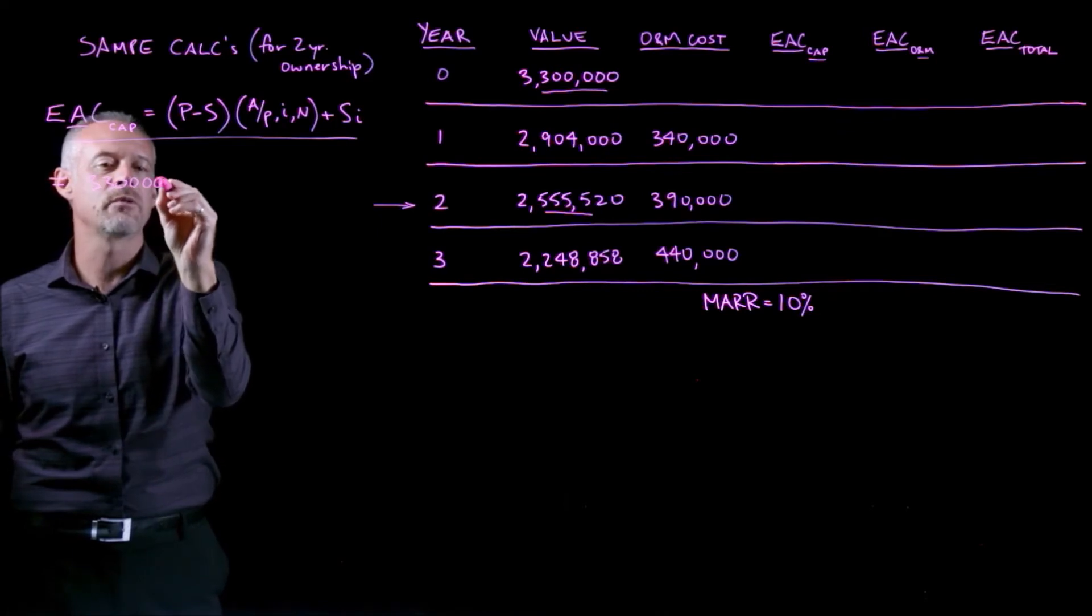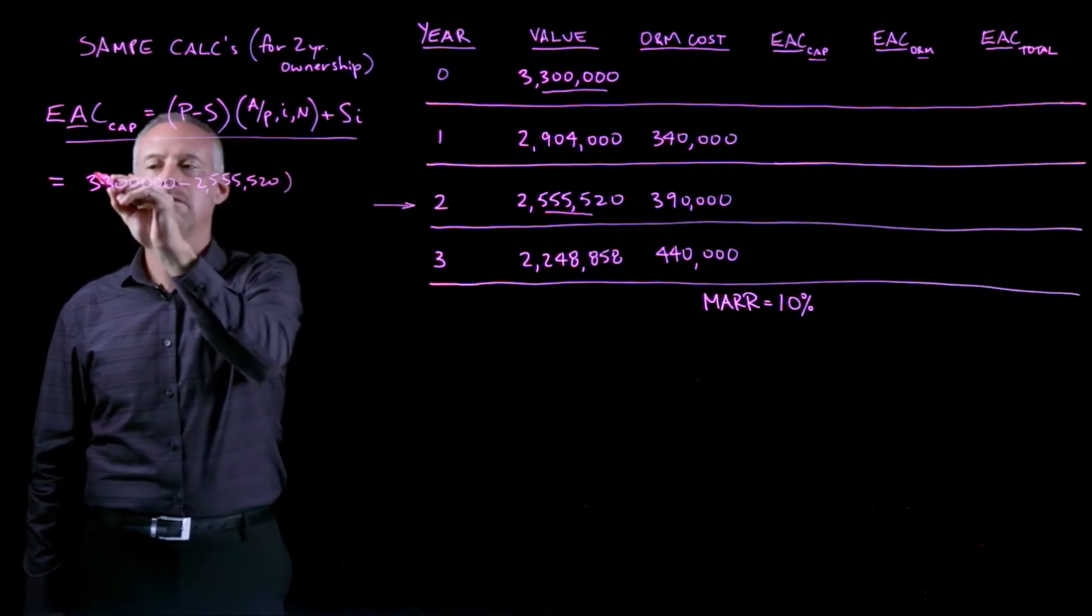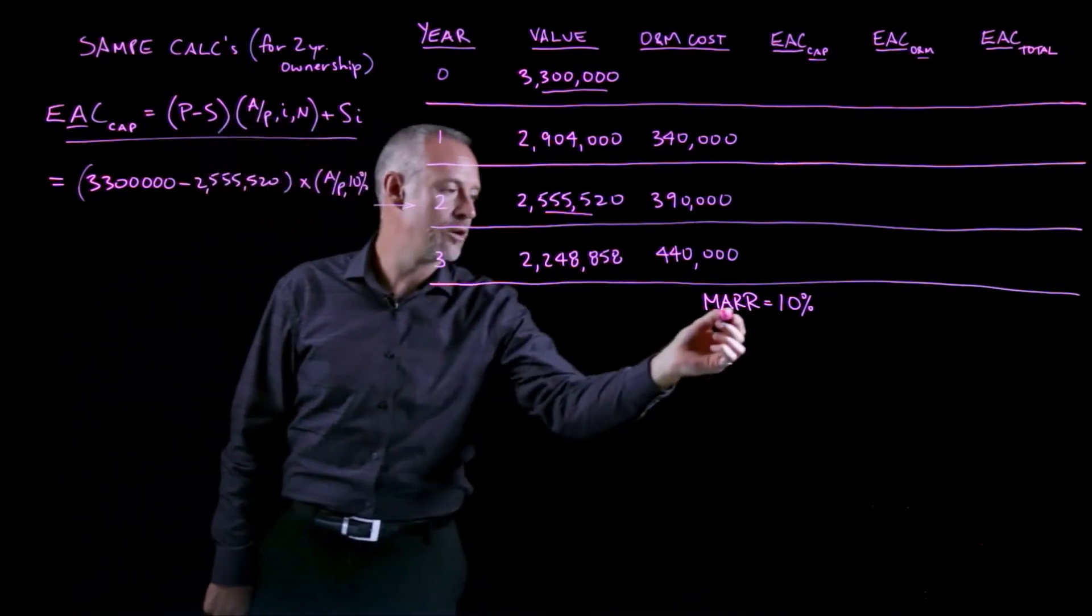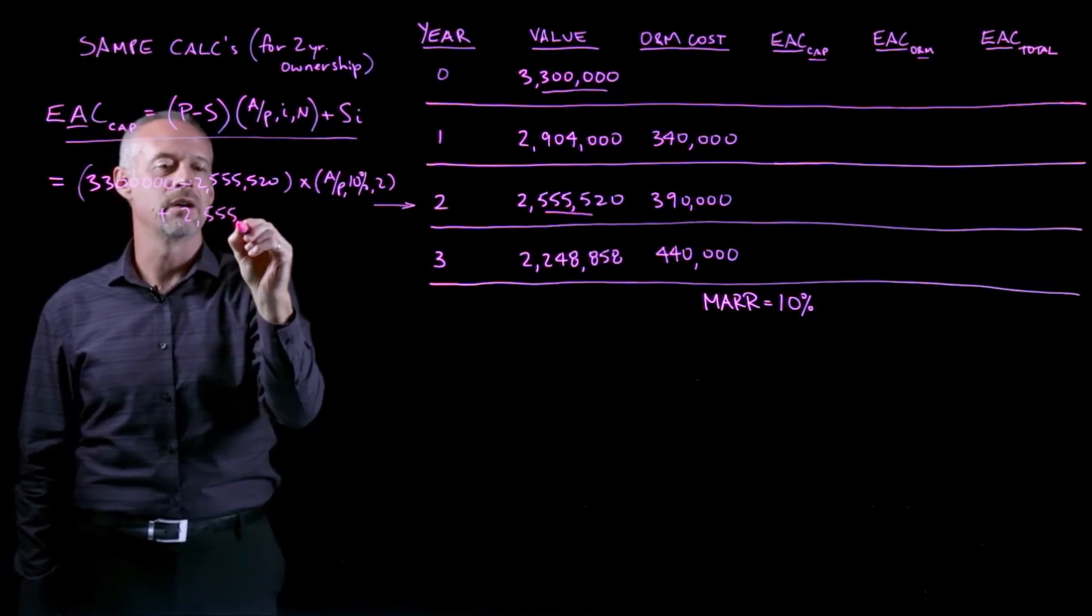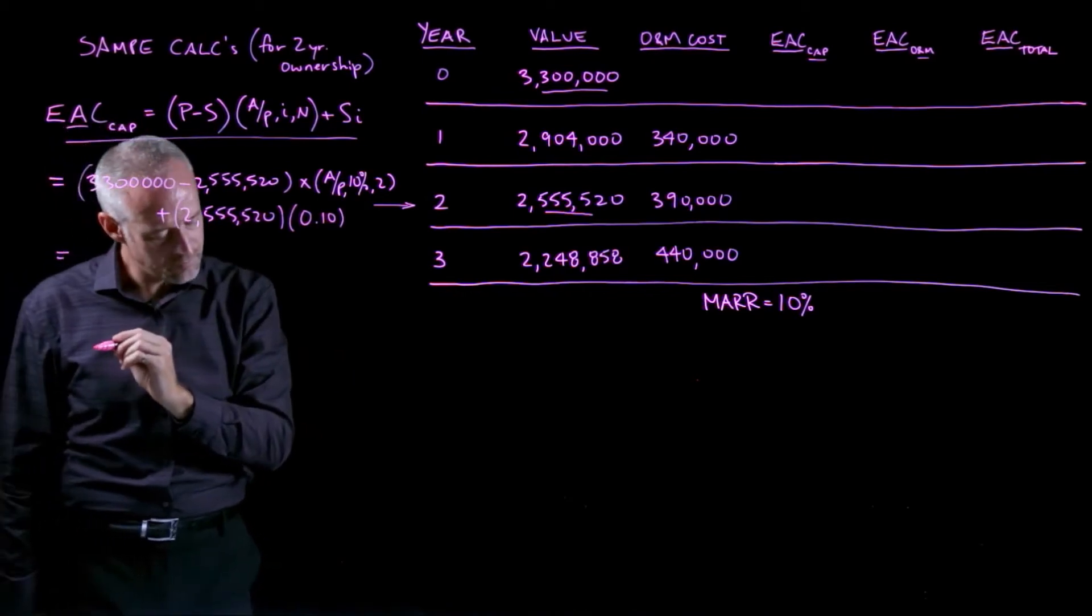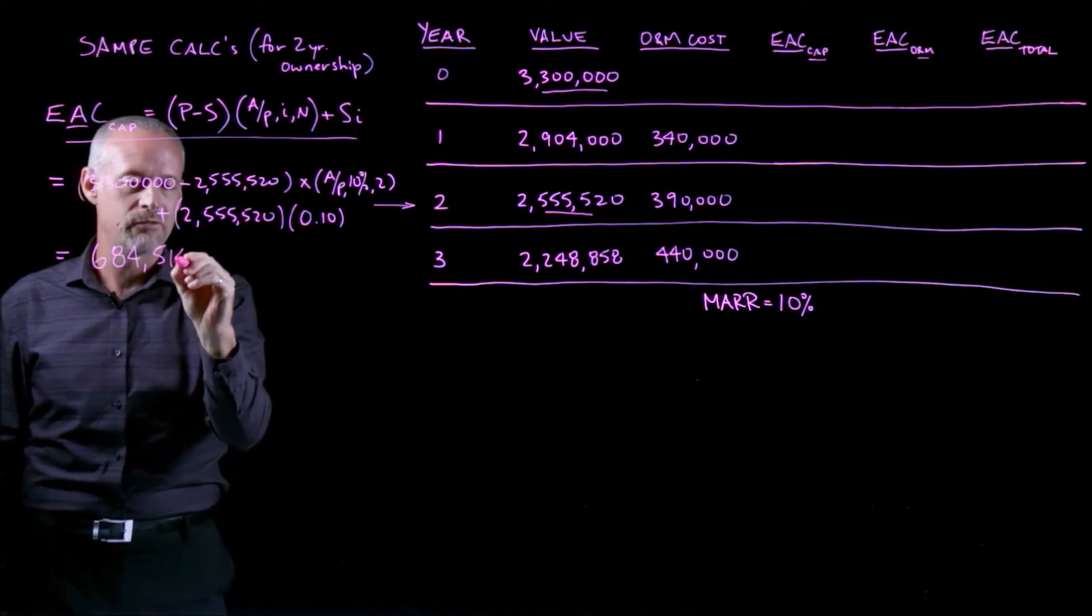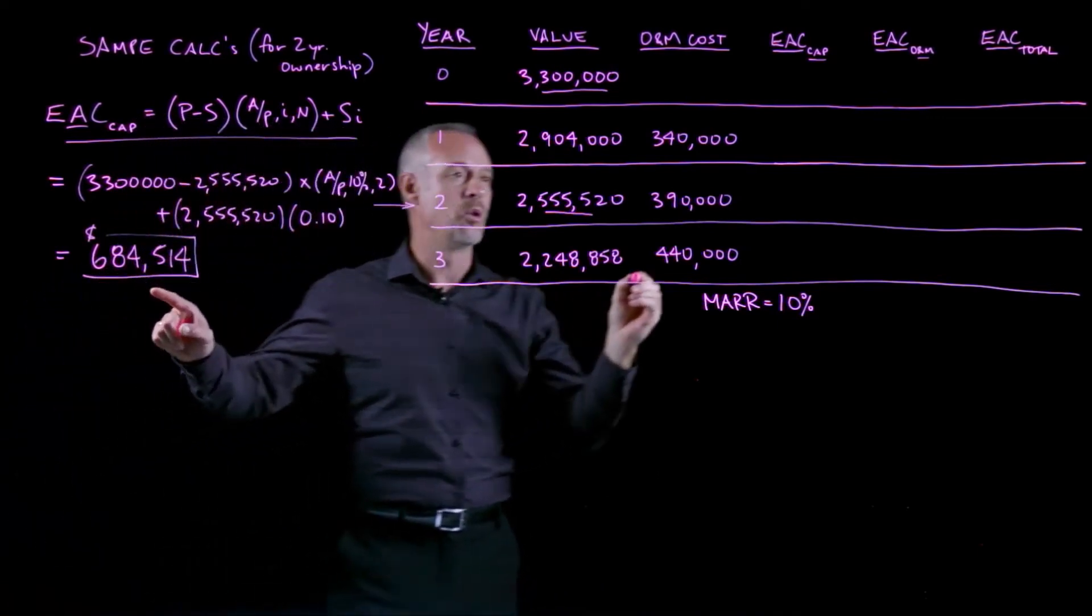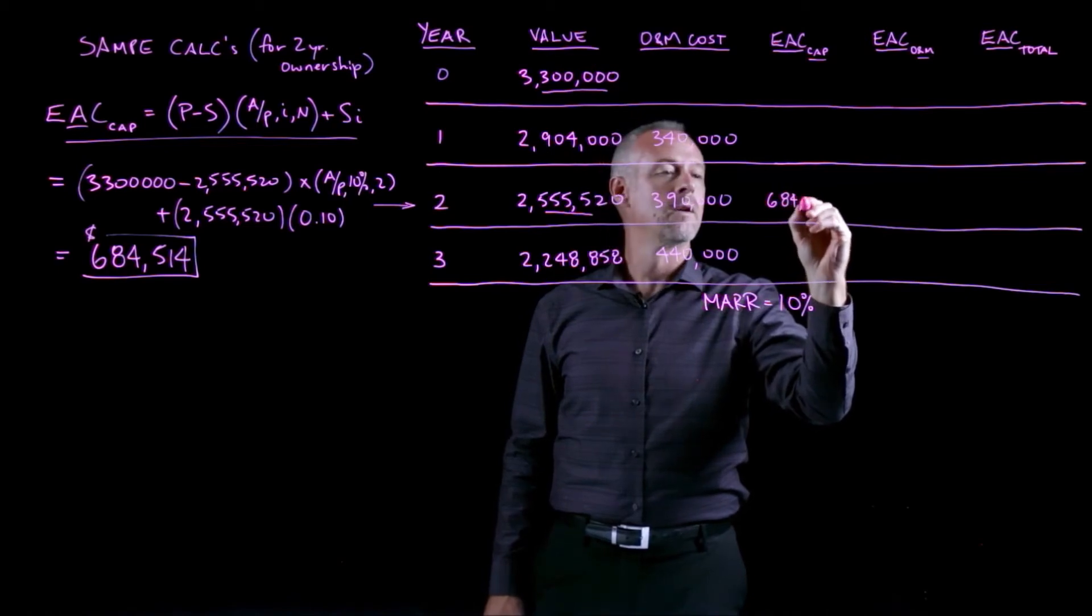If we can quickly substitute those numbers, I'll have the 3.3 million minus the 2.5 million and change, and then that's times the A given P factor for 10%, that's our MAR, and two years, plus the salvage value, which is the 2.55 million times the interest rate, which is 0.1. And if you work out what that number is, you should end up with $684,514 as my EAC for the cost of capital. And I can put that in the table. So for two year ownership, my EAC cap is going to be 684,514.